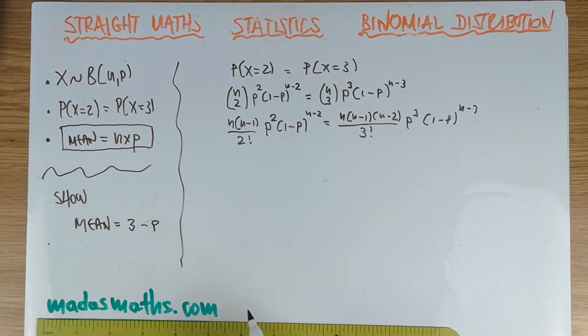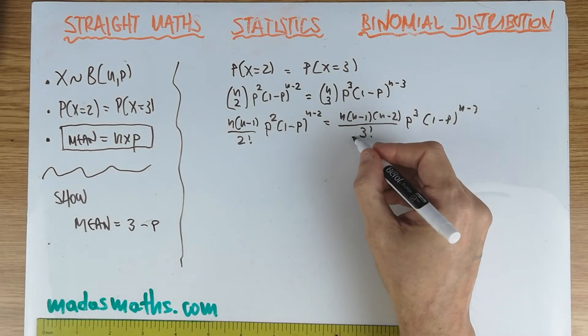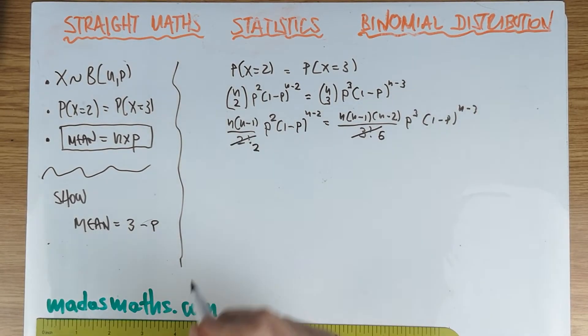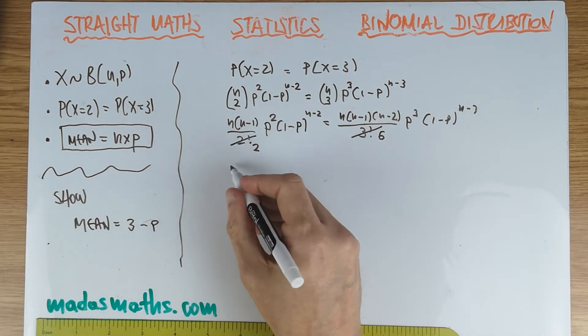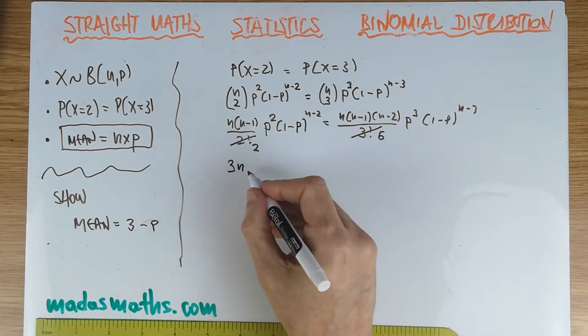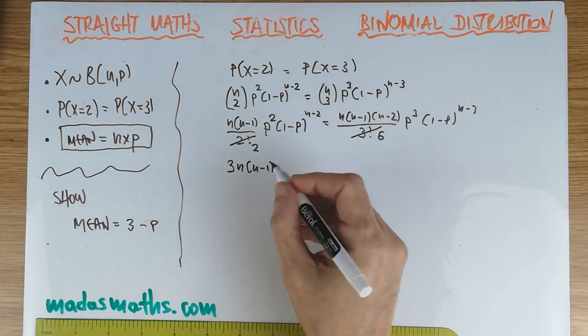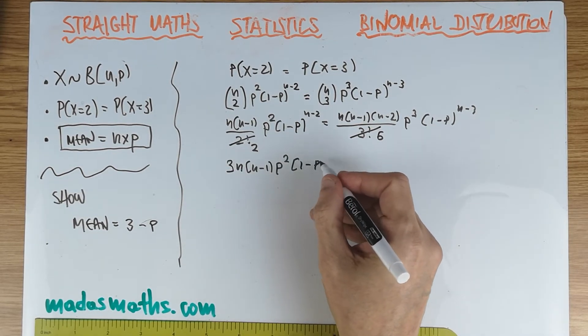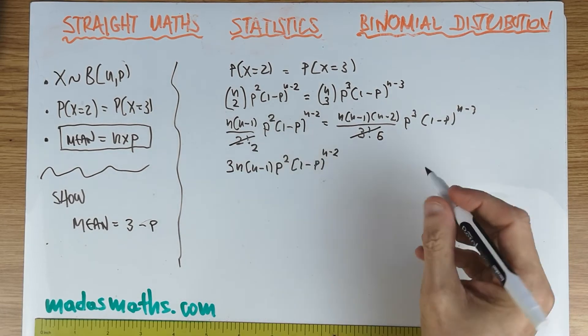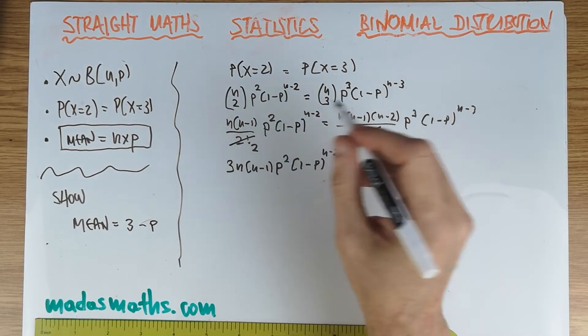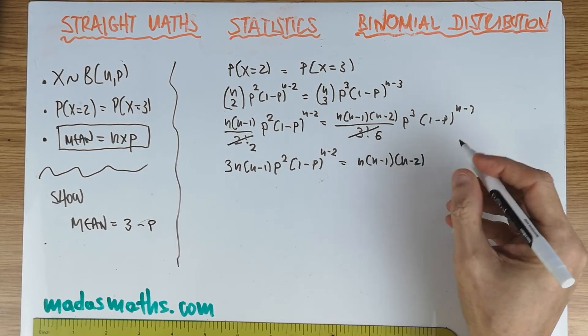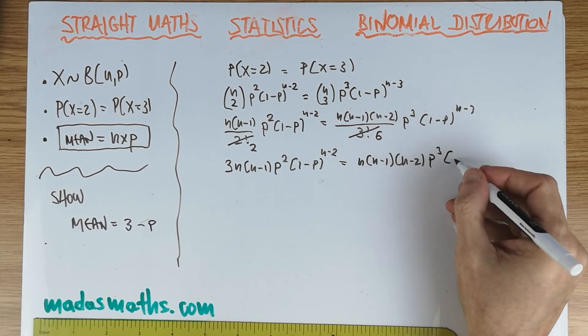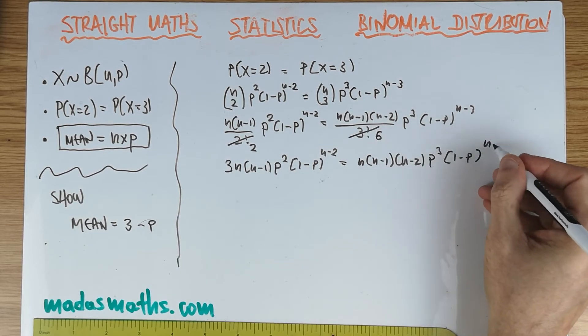So far so good, and I'm going to do one more line there. The three factorial is six, the two factorial is two, so I'm going to times the six across. Six over two is three. So three times n times n minus one times p squared times one minus p to the n minus two. This six has completely gone, so we go n times n minus one times n minus two times p cubed times one minus p to the n minus three.